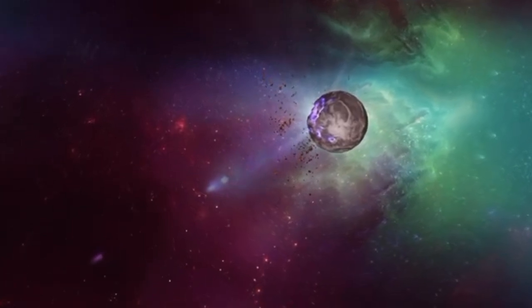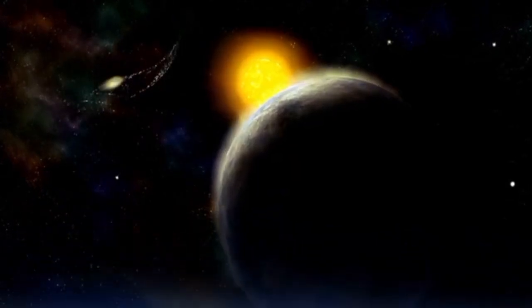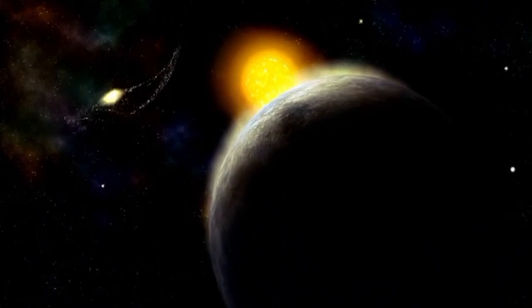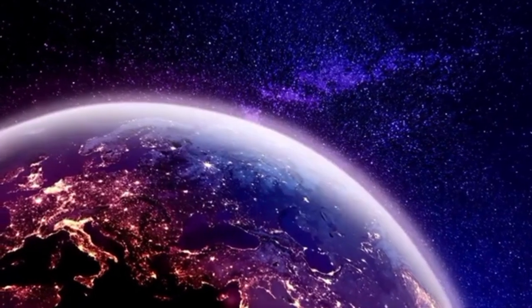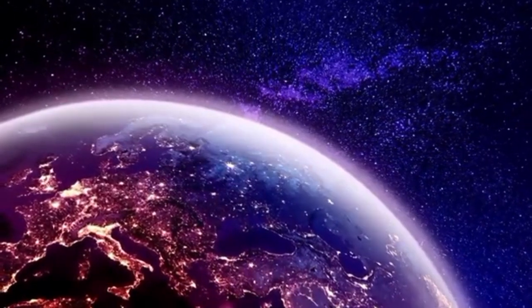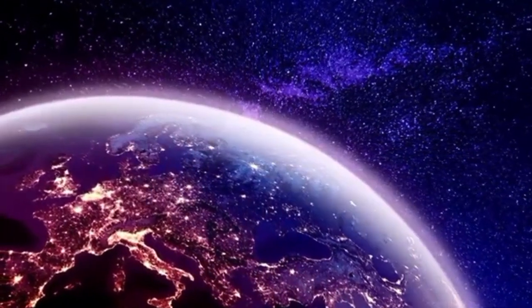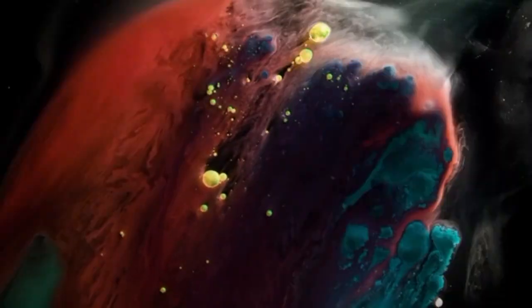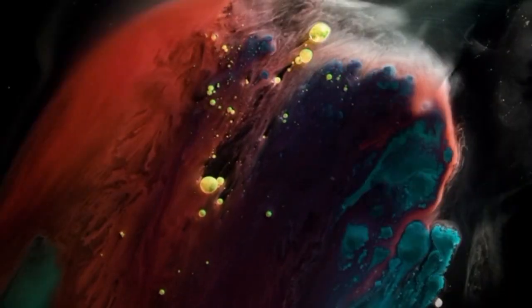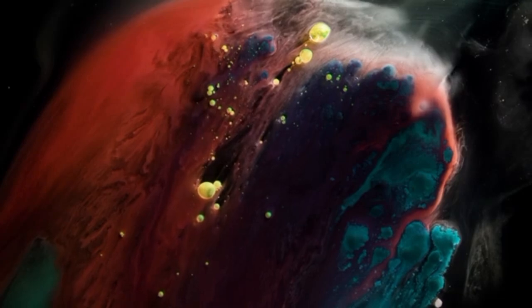Among these exoplanets is Saturn's moon Titan, a world where it rains liquid methane and ethane, and the rocks are composed of frozen water ice. Recently, NASA's James Webb Space Telescope captured Titan's atmospheric data, revealing the presence of not one, but two clouds.